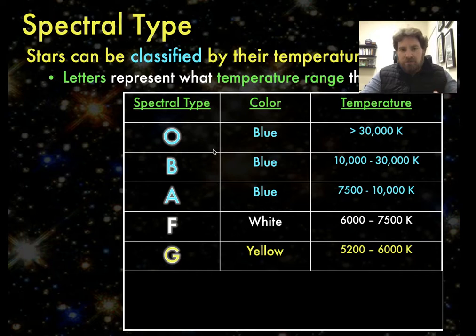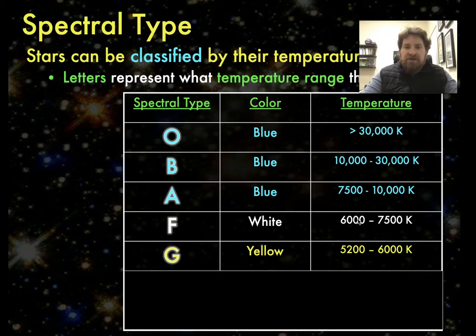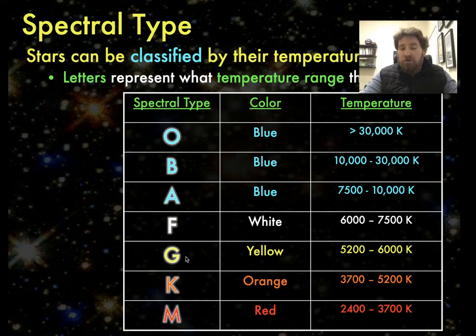As you go into cooler stars, you get into A, F, and G type stars, each of which has a corresponding temperature range. And so as we finally move towards the coolest stars, we get into the more orange and red stars.